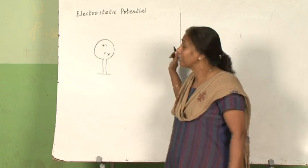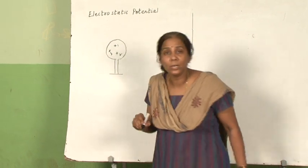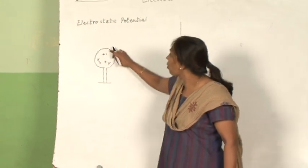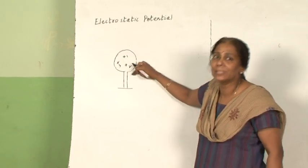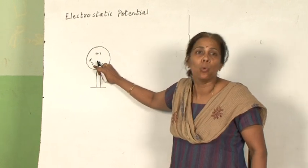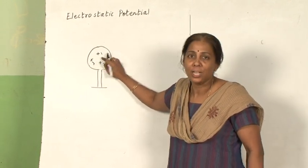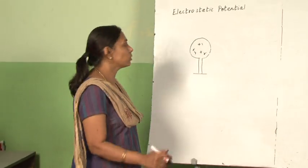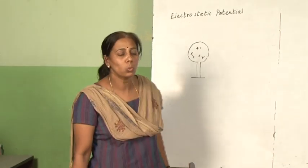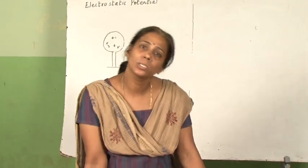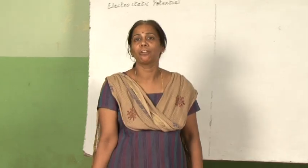The second charge has to do some work, which is stored as potential. If I now bring a third charge, even more work must be done because there are already two charges causing more repulsive force. So more potential is stored. As you give more and more charge to the system, its potential increases. In other words, potential is the amount of work done in carrying a unit positive charge from infinity to some point in an electric field.